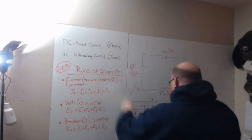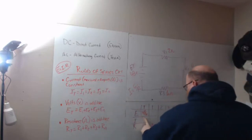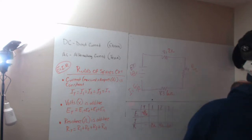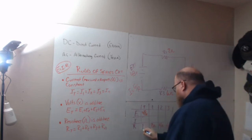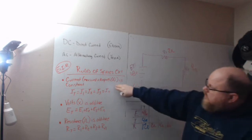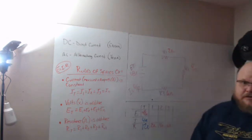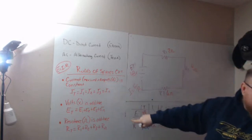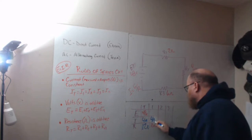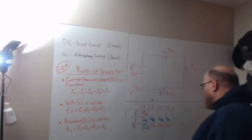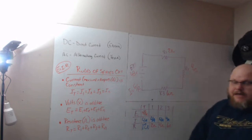First rule of series circuit. Actually, I want to change these colors though. 12 ohms, 4 amps. So using the first rule of a series circuit, current is constant. So that means the current at the first resistor is 4 amps, the second resistor is 4 amps, and the third resistor is 4 amps.